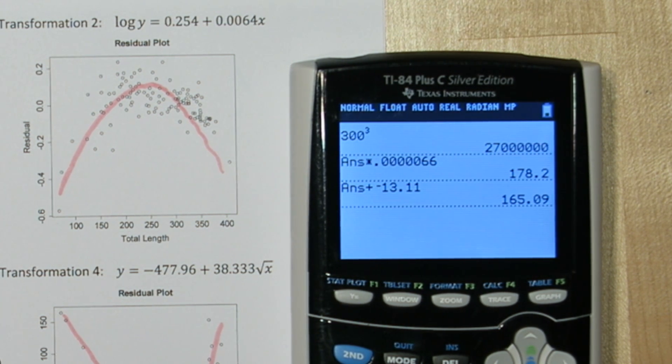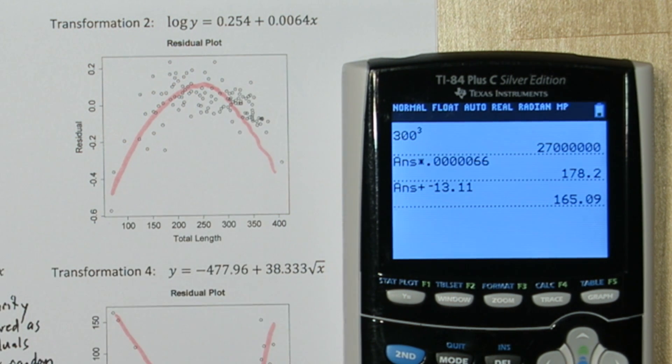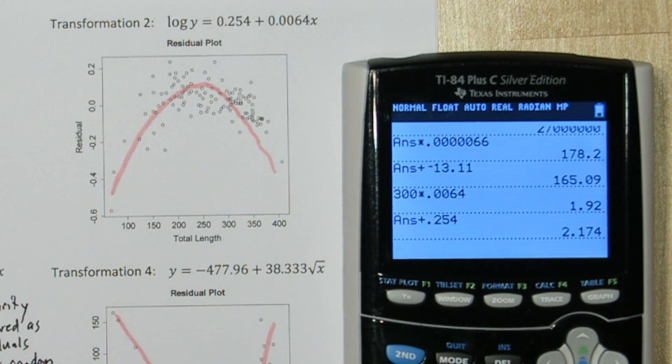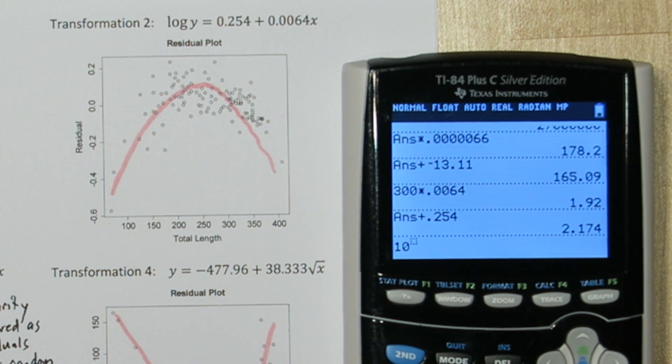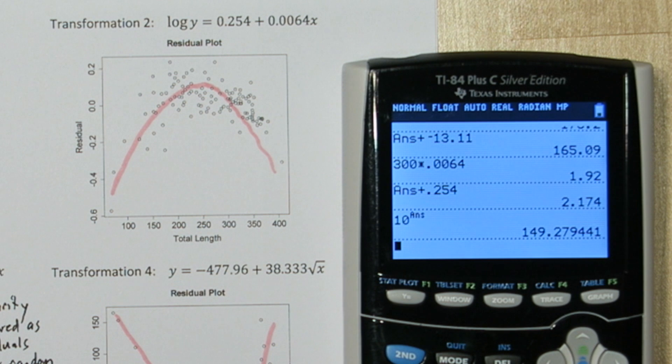On the second transformation, we have to multiply our 300 by this coefficient. Next, we add the y-intercept 0.254. Alright so we have the log of our weight has to equal 2.174. Now what this means is 10 raised to the 2.174 power is going to equal the weight of our shark. So all we need to do is raise 10 to 2.174. Alright, transformation 2 predicts the shark will be about 149.28 kg.